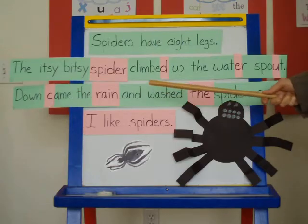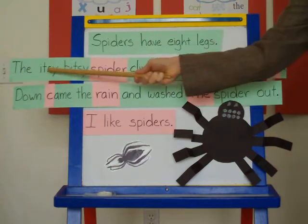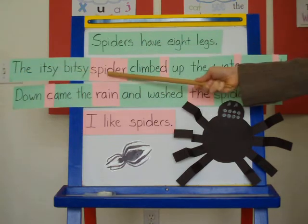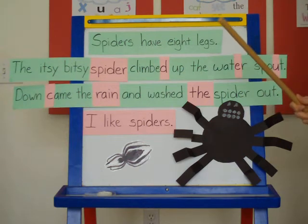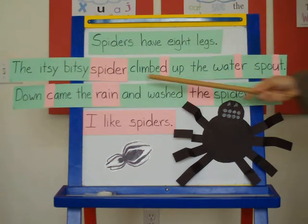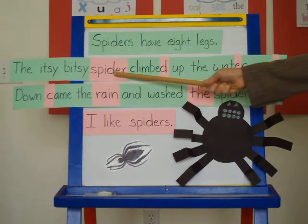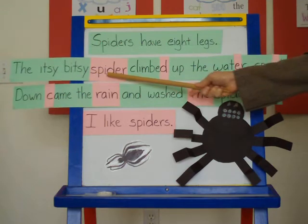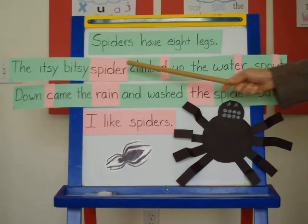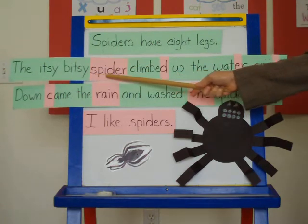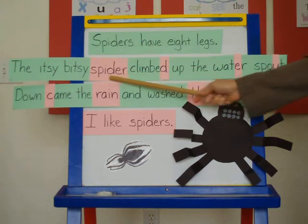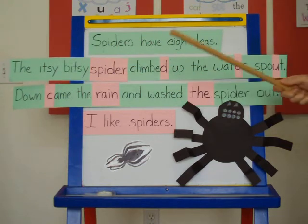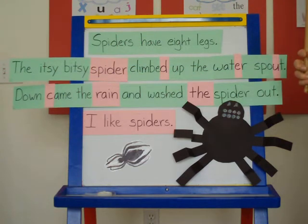Let's look at our next sentence: The itsy bitsy spider climbed up the water spout. Let's look at our pink — I see spider. Spider is made up of letters. That means spider is a word and it has to go under our word category.